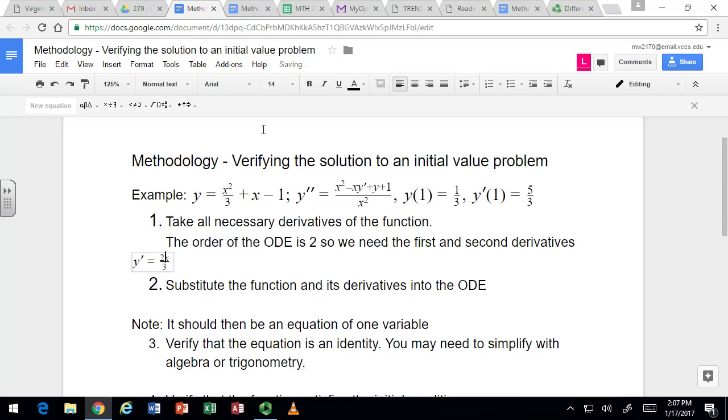So let's see, first derivative is just 2x over 3 plus 1. Now do another derivative, and it should just be two thirds.